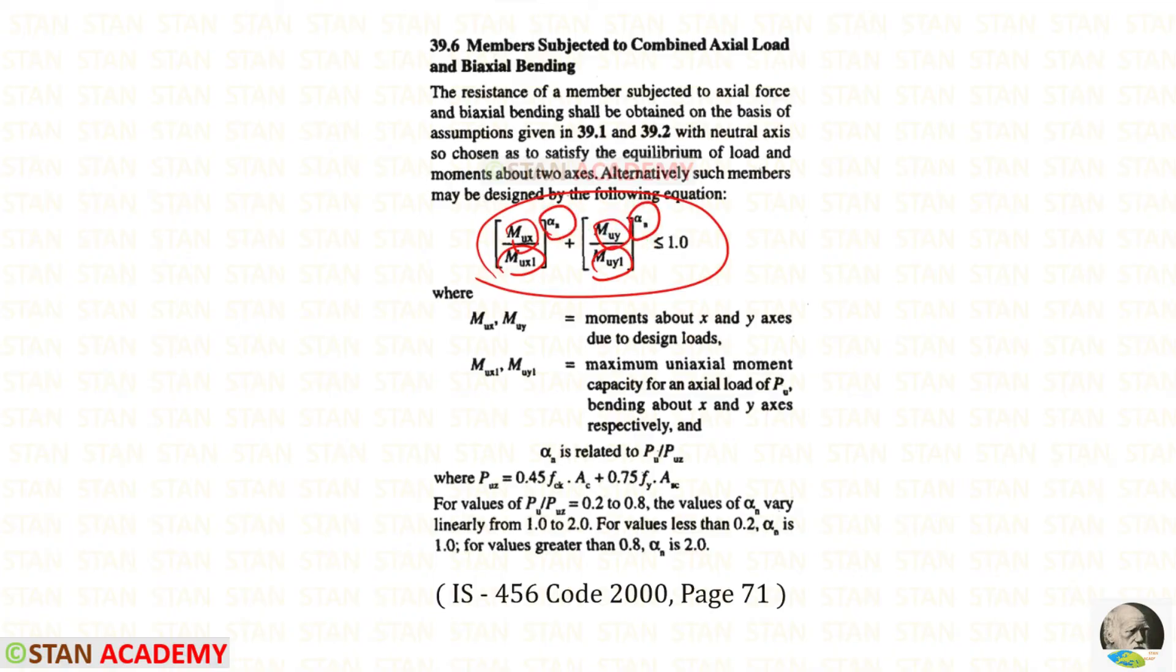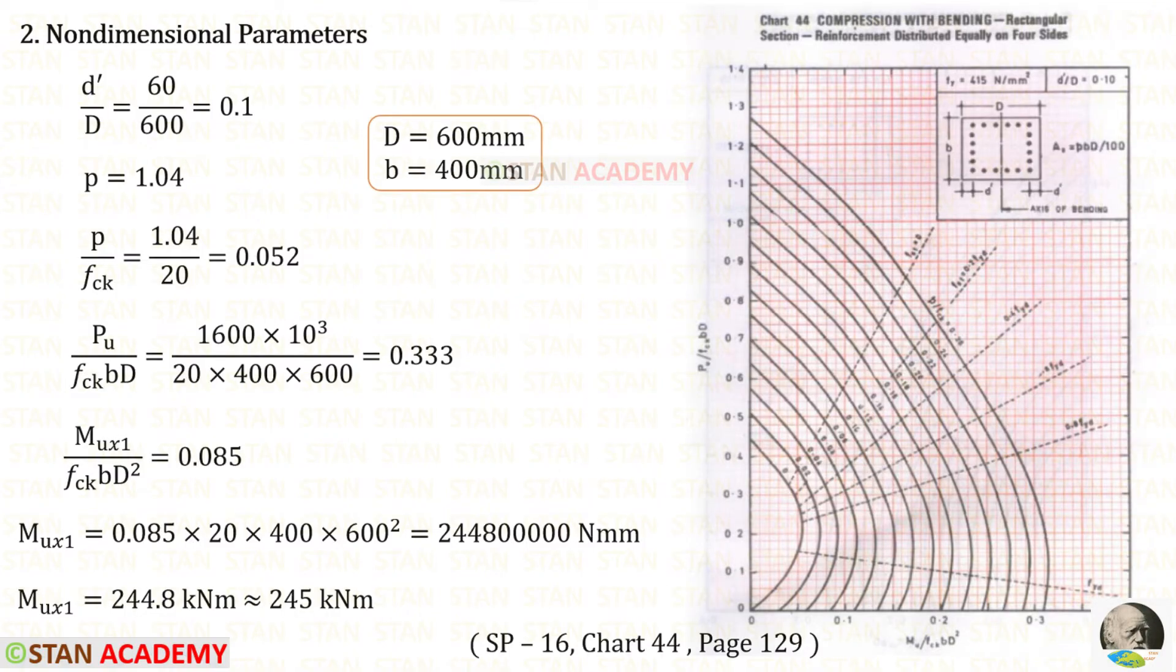Let us see how to find them. Let us find d' upon D. We will get 0.1. We know the value of p, 1.04. Let us open SP16, page number 129, chart number 44. I have selected this chart because d' upon D is 0.1 and our fy is 450 N/mm². Also, I am going to distribute the reinforcement equally on the four sides.